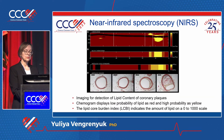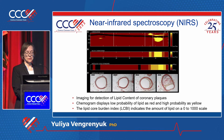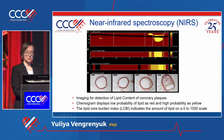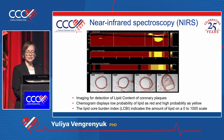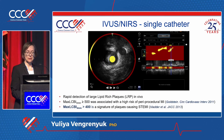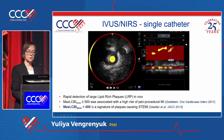Near-infrared spectroscopy (NIRS) is a more recently developed imaging modality that allows us to detect lipid content of coronary lesions. This is a chemogram — lipid is shown in yellow and fibrous tissue in red. This technology gives a single number for each lesion: the lipid core burden index (LCBI) on a scale from 0 to 1000. In modern catheters, IVUS and NIRS are combined in the same catheter.